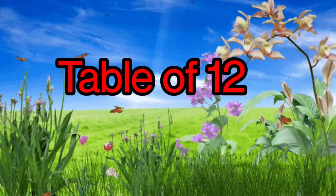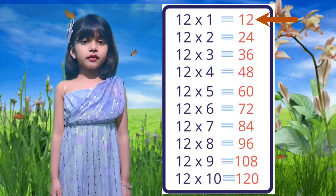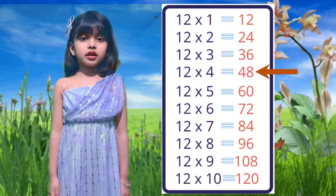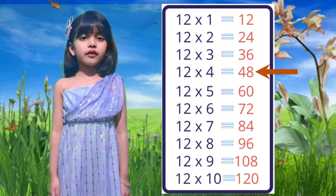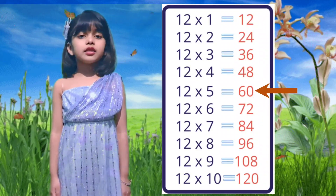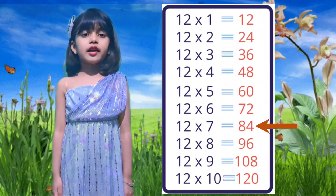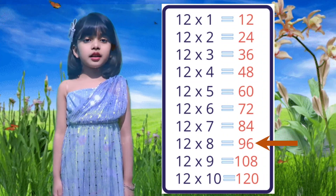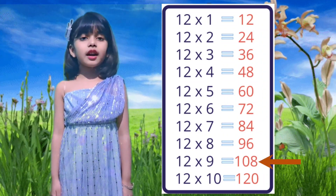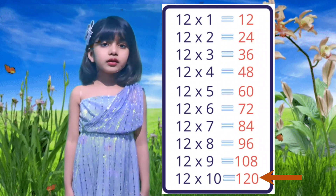Table of 12. 12×3 is 36, 12×4 is 48, 12×5 is 60, 12×6 is 72, 12×7 is 84, 12×8 is 96, 12×9 is 108, 12×10 is 120.